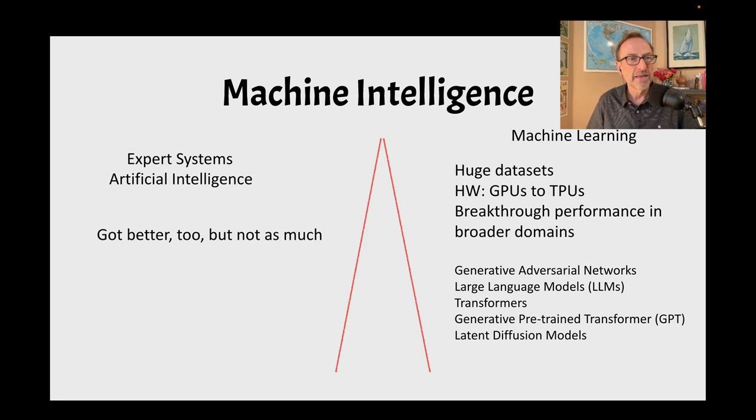So what happens then? Expert systems got better too, but not as much. Machine learning started to take off because we started to get gigantic data sets. GPUs gave way to TPUs, tensor processing units, and other special purpose hardware that could do the matrix math and other things much better, and we got breakthrough performance in much broader domains. You've seen it some yourself with GPT-4 and stable diffusion and a series of other things, and here the models are called generative adversarial networks, large language models, transformers. GPT is the generative, pre-trained transformer, and latent diffusion models like stable diffusion for artwork.